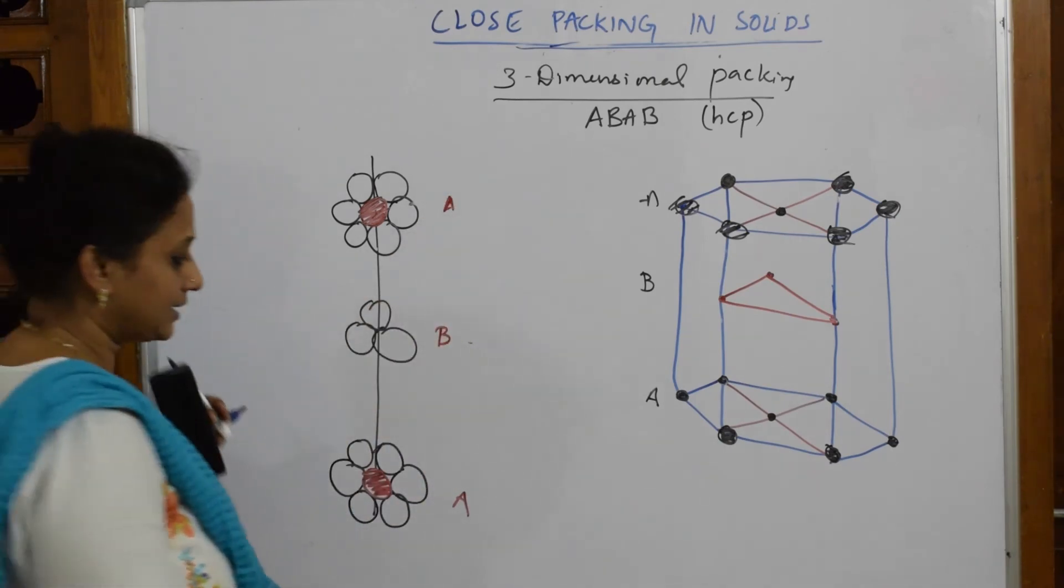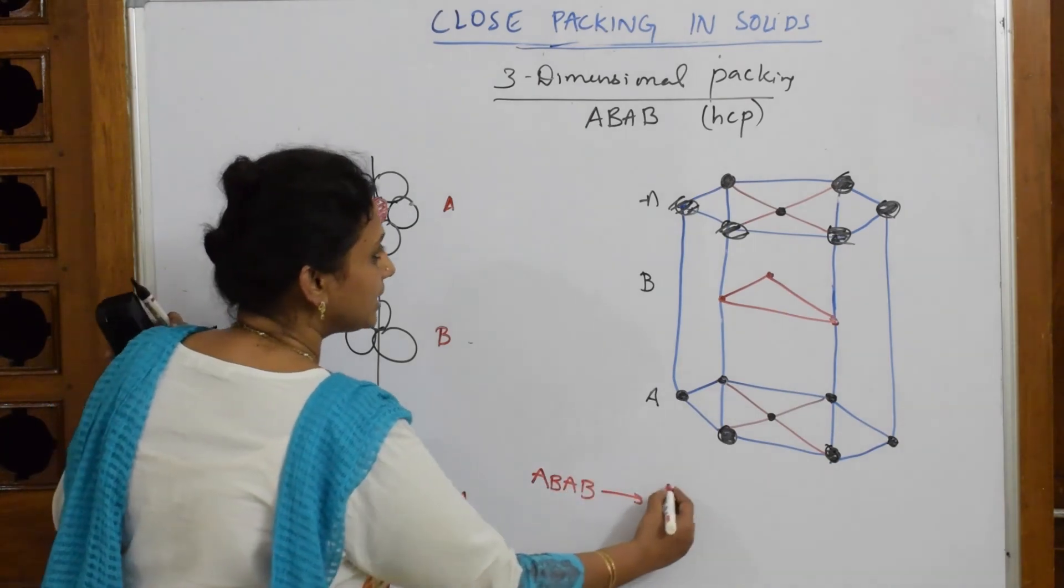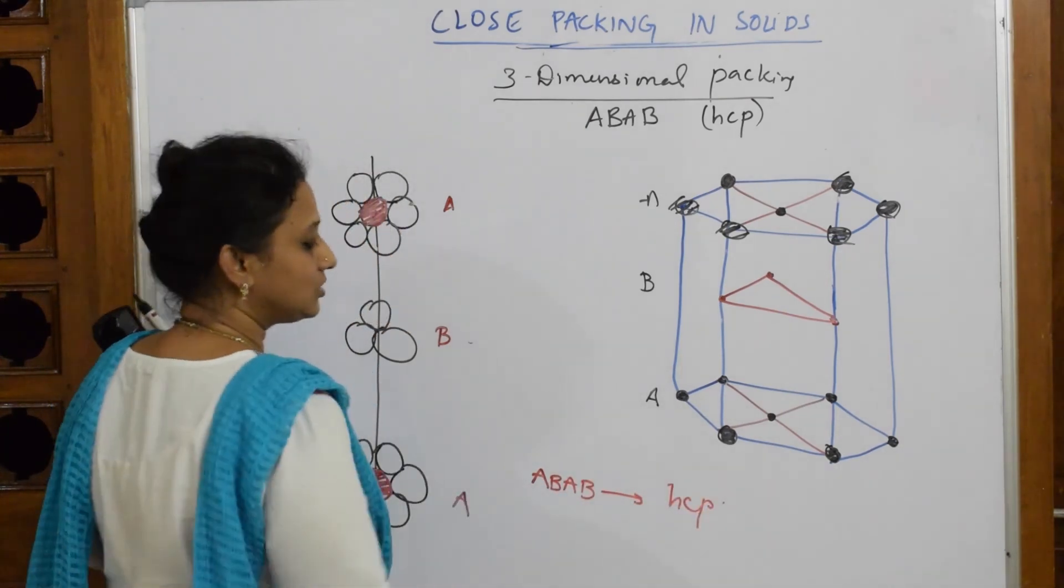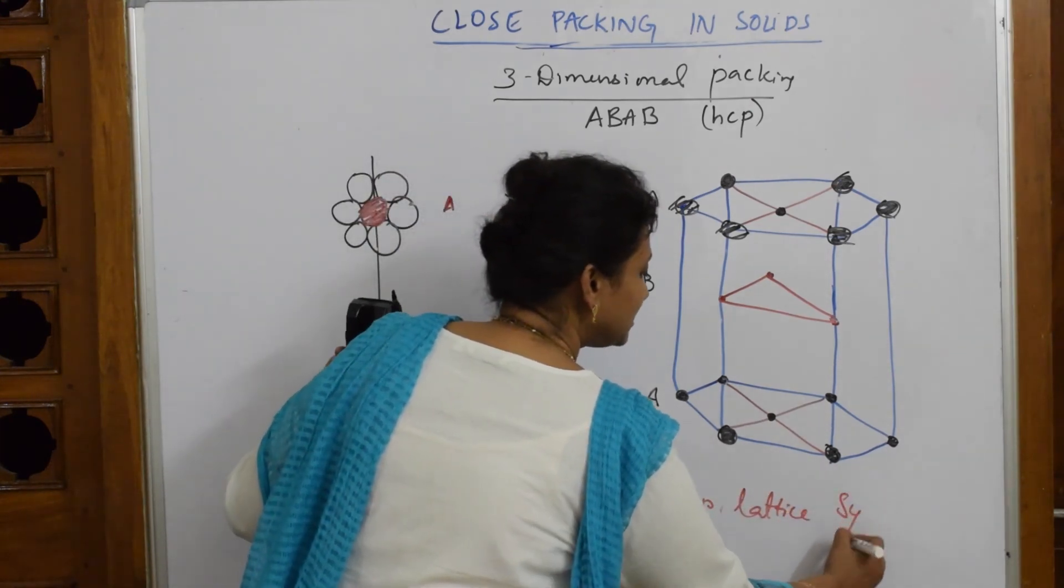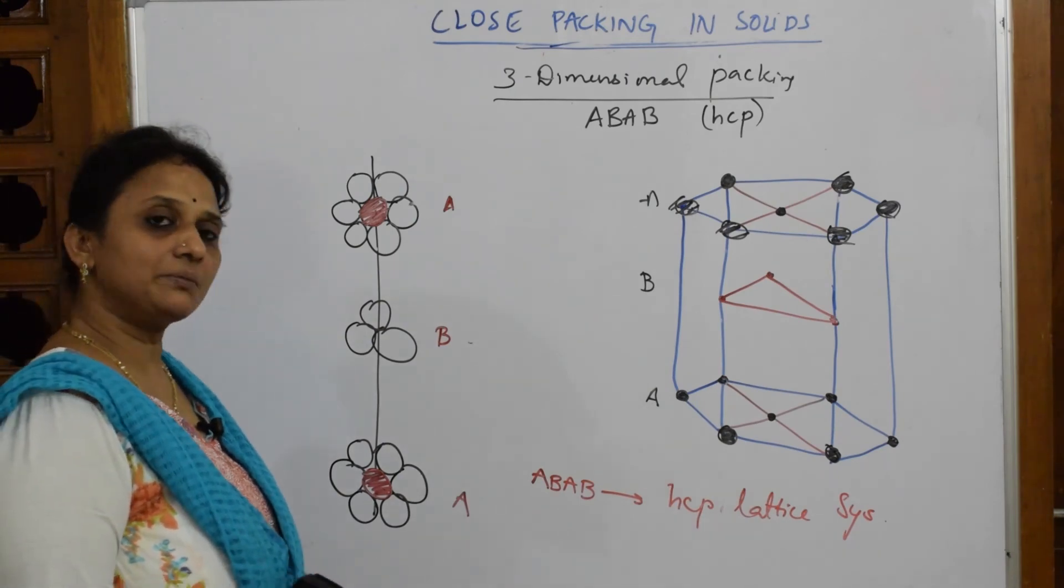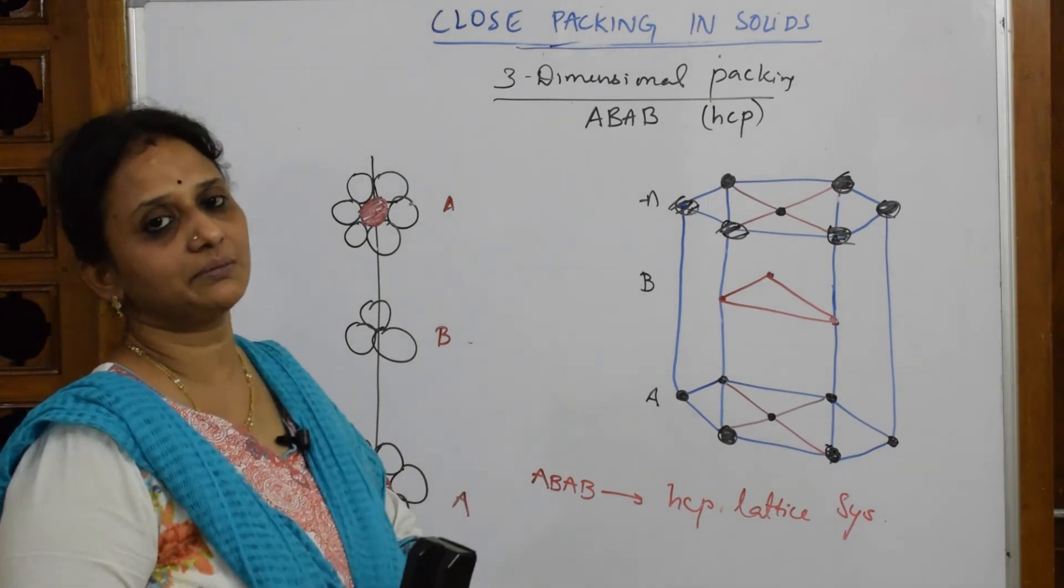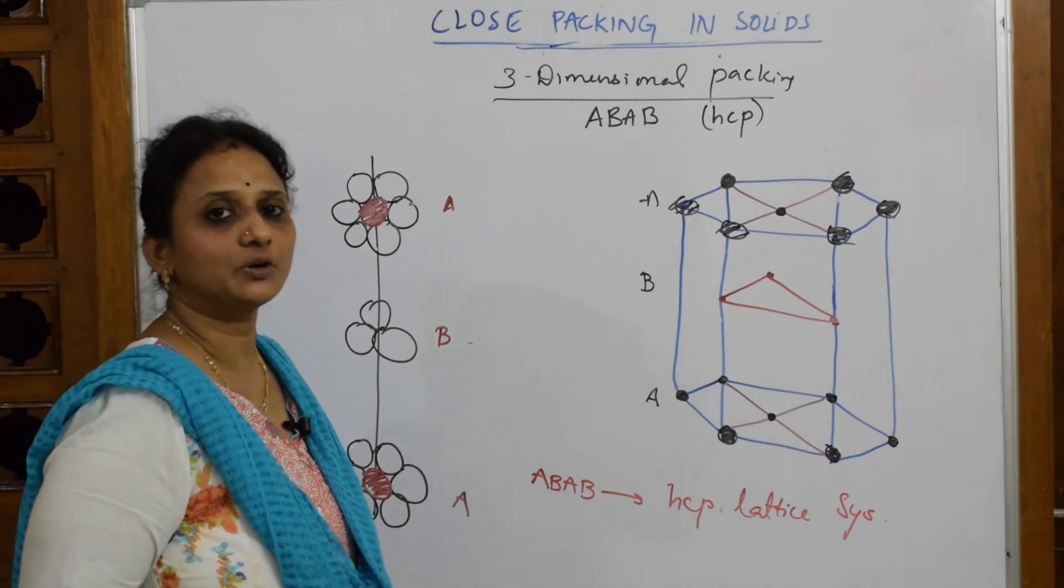This is called ABAB packing, so it is ABAB packing found in HCP lattice or HCP lattice system. This is how we learn the packing for one-dimensional, two-dimensional, and three-dimensional. In three-dimensional, you have ABC and ABAB packing. Thank you for watching.